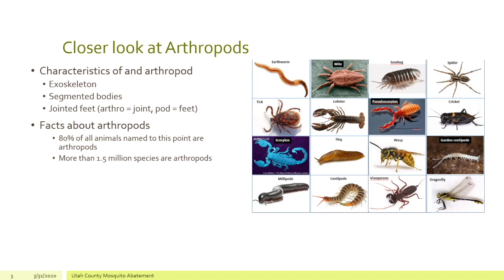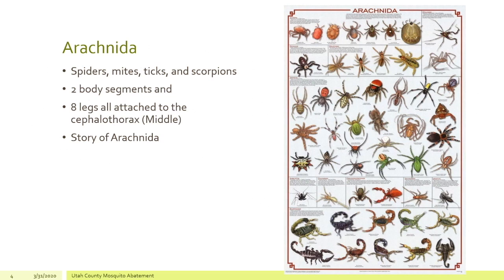All arthropods — all of these critters we're going to talk about — have that one thing in common. About eighty percent of all the animals named to this point are arthropods, which is more than 1.5 million species of arthropods in the world.